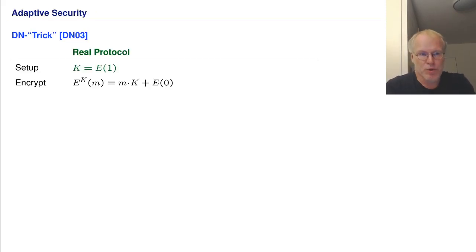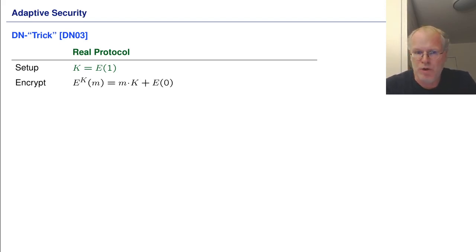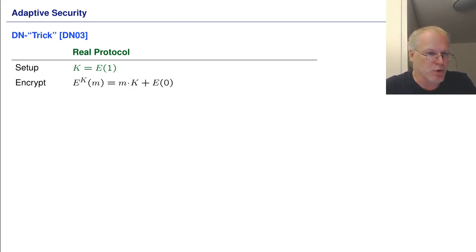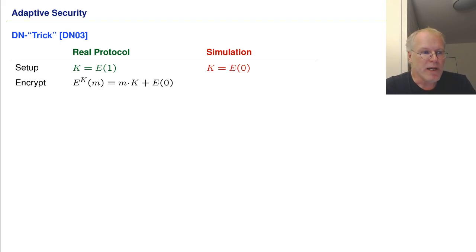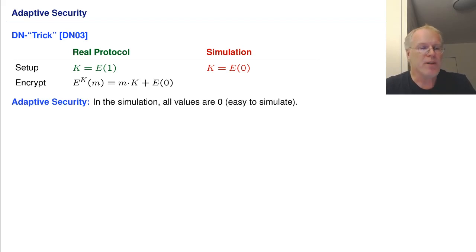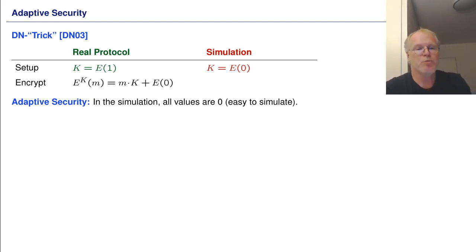In order to achieve adaptive security, we use the trick by Damgård-Nielsen 2003. The basic idea is that as a setup assumption, we have a constant encryption of one, called k. In order to encrypt message m with respect to k, we multiply k m times and add an encryption of zero to randomize. This gives an encryption of m if k is an encryption of one. However, in the simulation, k is set to be an encryption of zero rather than one. So in the simulation, all values are zero — inputs are encryptions of zero, outputs are encryptions of zero — which is easy to simulate.